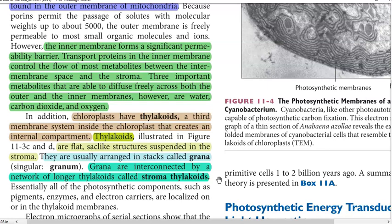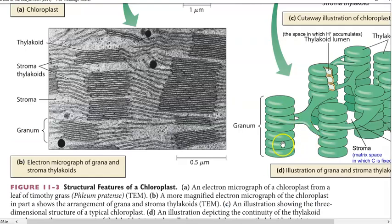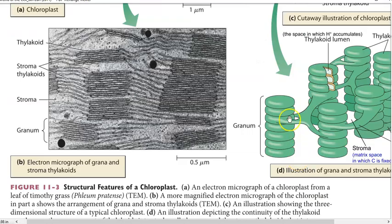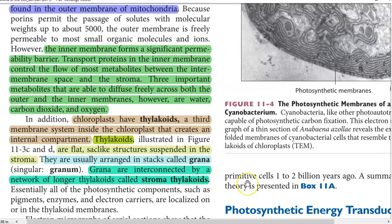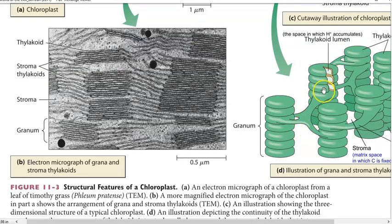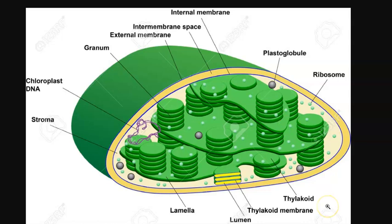Thylakoids are flat, sac-like and suspended. They are usually arranged in stacks, one above the other, and they are called grana. Grana are interconnected by a network of longer thylakoids called stromathylakoids. Stromathylakoids are the ones interconnecting the grana.